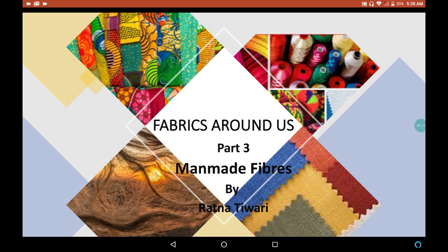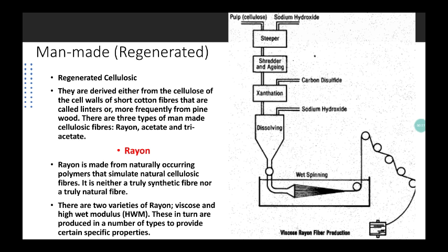In part 2, I explained to you about natural fibers and their properties like cotton, silk, jute, wool, linen, etc. So let's begin with man-made fiber, regenerated cellulosic fiber.